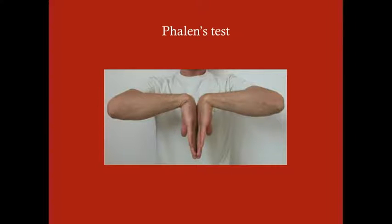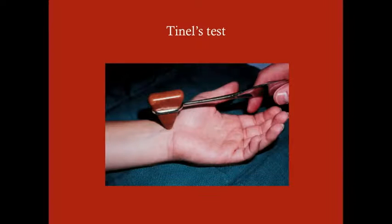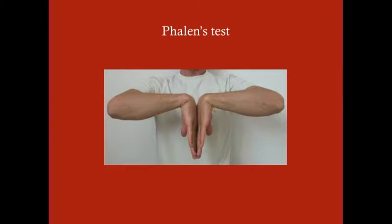Phalen's test works because flexion increases pressure within the carpal tunnel due to bone alignment. The patient puts both hands into flexion and pushes them together — forced hyperflexion — for about one minute. This should produce pain, paresthesias, or numbness. Both tests aim to irritate the median nerve: Tinel's by direct compression, Phalen's by increasing carpal tunnel pressure.